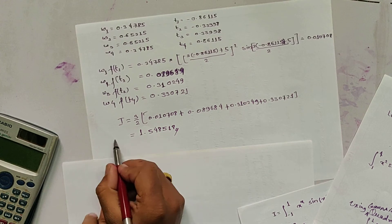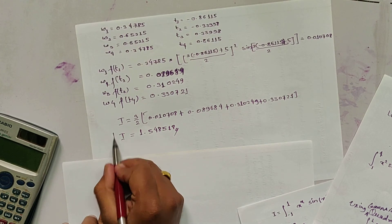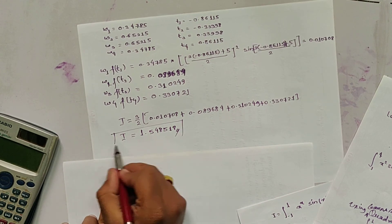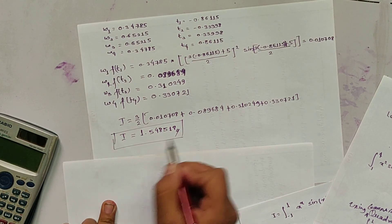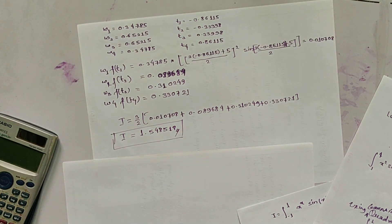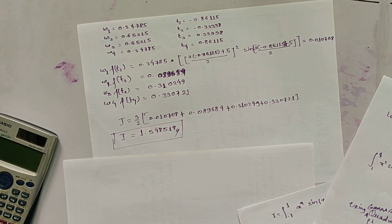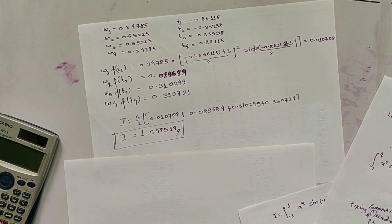This is the value of the integral by using the Gaussian 4-point form. In the next video, we will be solving an integral using the Rombach method. Thank you and bye bye.